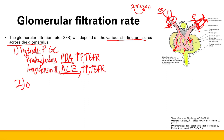Next, we'll talk about oncotic pressures in the glomerular capillary. Remember, it's affected by levels of plasma protein concentration. The key condition to think about is nephrotic syndrome, where you urinate out large amounts of protein.